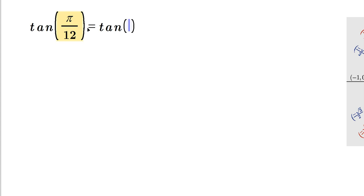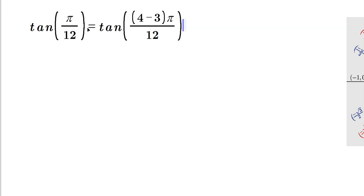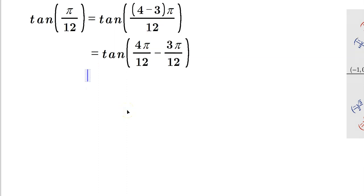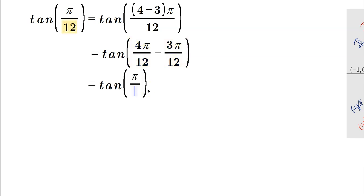You can write pi over 12 as 4 minus 3 pi over 12. In other words, to use a famous formula, you need to break this up into something like this. What you have is 4 pi over 12 minus 3 pi over 12. You need to break it up into angles, then reduce — dividing 4 away gives pi over 3, and dividing 3 away gives pi over 4.